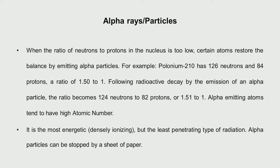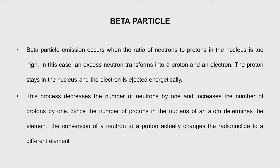Alpha particles are energetic but are the least penetrative of all radiations — they can be stopped even by a sheet of paper. For beta particles, this occurs when the ratio of neutrons to protons in the nucleus is too high. The excess neutron transforms into a proton and an electron; the proton stays in the nucleus and the electron is ejected. This reduces neutron count by one and increases proton count by one, effectively changing the element.